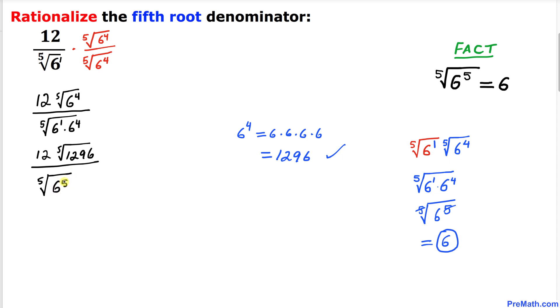This could be written as the fifth root of 6 to the power 5. Since this exponent 5 and this index 5 undo each other, we simply got 12 times the fifth root of 1296 divided by just simply 6.